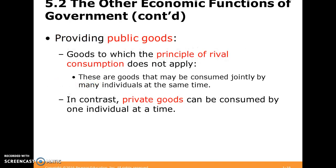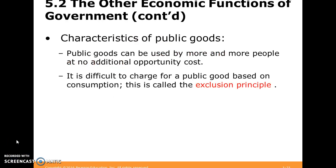Another function of government is providing public goods — goods where we don't have rival consumption; they are non-rivalrous. These goods can be consumed jointly by many individuals at the same time, in contrast with private goods that can only be consumed by one individual at a time. Public goods can be used by more and more people at no additional opportunity cost, which makes it difficult to charge for them based on consumption. This is called the exclusion principle.